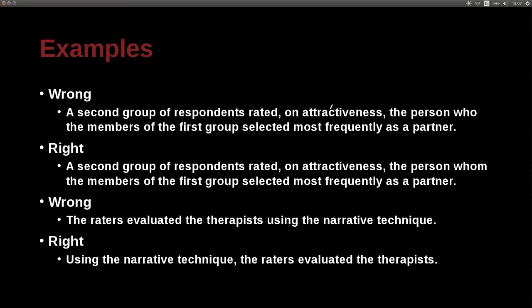'A second group of respondents rated on attractiveness the person who the member of the first group selected most frequently as a partner' is wrong. The correct version uses 'whom.' A general rule of thumb: if you can replace the word with 'he' or 'she,' use 'who.' If you can replace it with 'him' or 'her,' use 'whom.' In this case, 'the person' fits 'him or her,' so we use 'whom.'